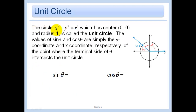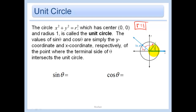The circle x squared plus y squared equals r squared, which has center (0,0) and a radius of 1, is called the unit circle. Here the radius equals 1 — that's why the circumference is 2π. The values of sine and cosine are simply the y-coordinates and the x-coordinates. I'm going to put my triangle in the first quadrant, because I think it's easiest to think about there.